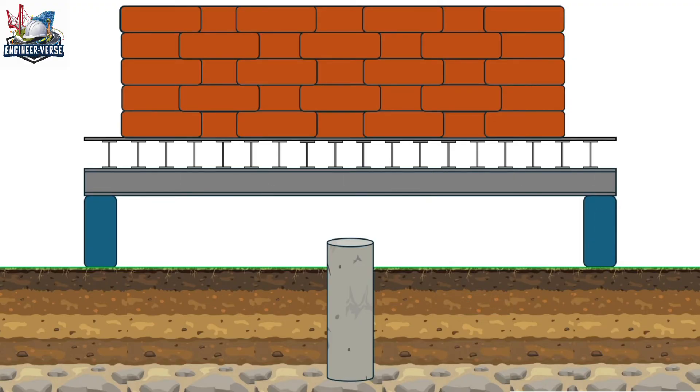To transfer the loads through the pile, a steel plate is kept on the top end of the pile and then a hydraulic jack is placed above it.